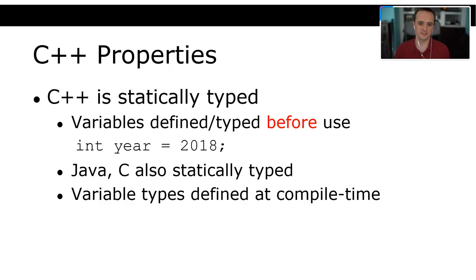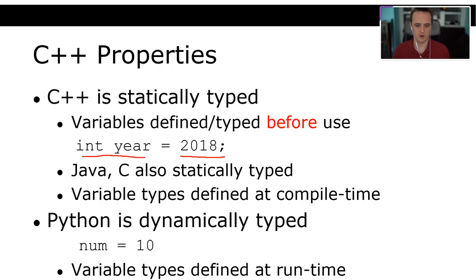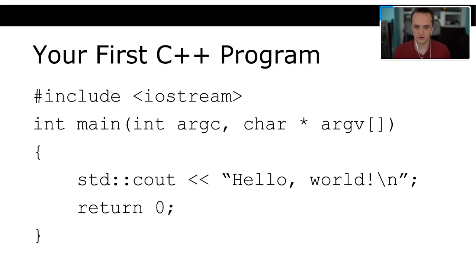C++ is statically typed, meaning the variable type is defined before use — for example, 'int year = 2018'. Java and C are also statically typed; variable types are defined at compile time. Python and JavaScript are dynamically typed — you do not have to define the type, and variable types are defined at runtime.